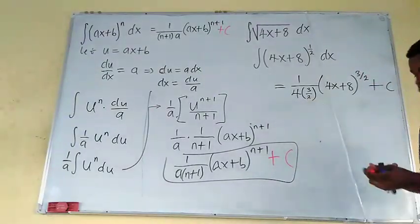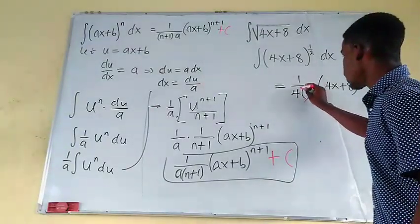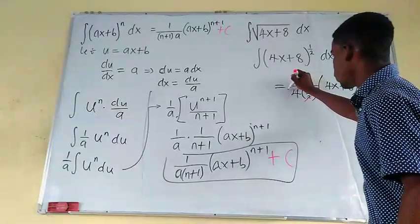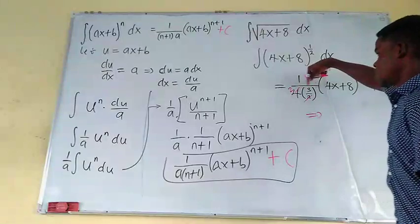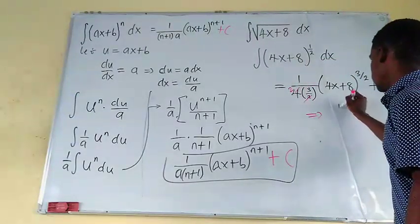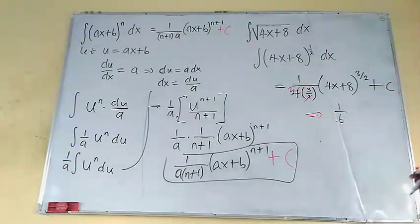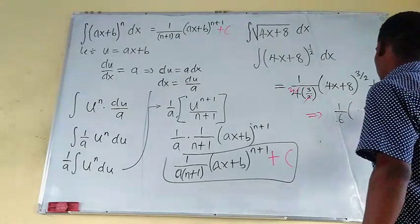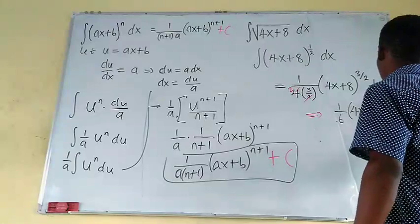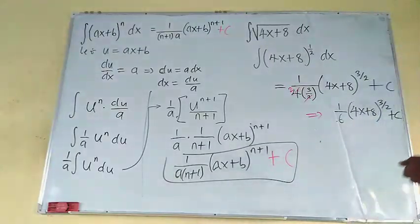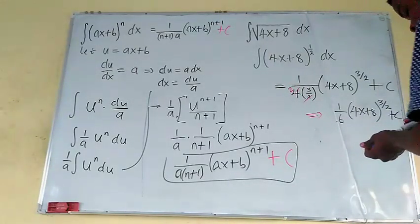Here, you have 2 in the denominator. You can actually cancel the 4 here, like this. And we are left with 2 up here. So this is going to become 2 times 3. That's 1 over 6. So we have 1 over 6 times 4X plus 8, raised to the power of 3 over 2, and plus the constant C. Like that. And we are done.